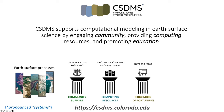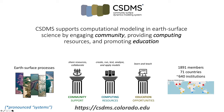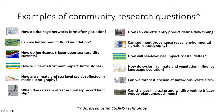I want to say a little bit about CSDMS science. The Earth's surface is a complex and exciting place, and the science of it is equally broad. This slide shows just a few examples of recently published or ongoing projects that explore different facets of Earth's surface dynamics. They range very widely — from permafrost to natural hazards to landform evolution. A particular interest involves life and landscape: how do cycles in climate and vegetation influence landscape evolution, or can changes in grazing and wildfire regime trigger woody plant encroachment?